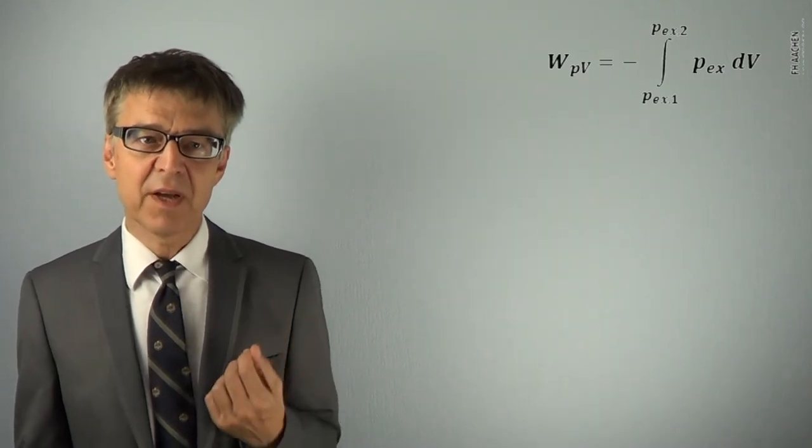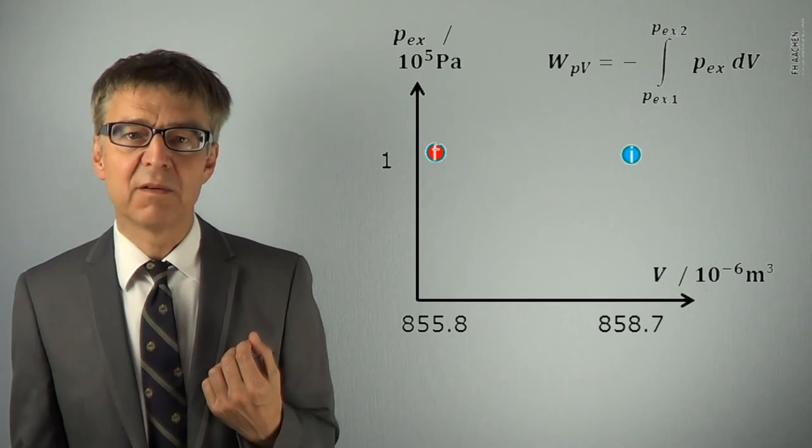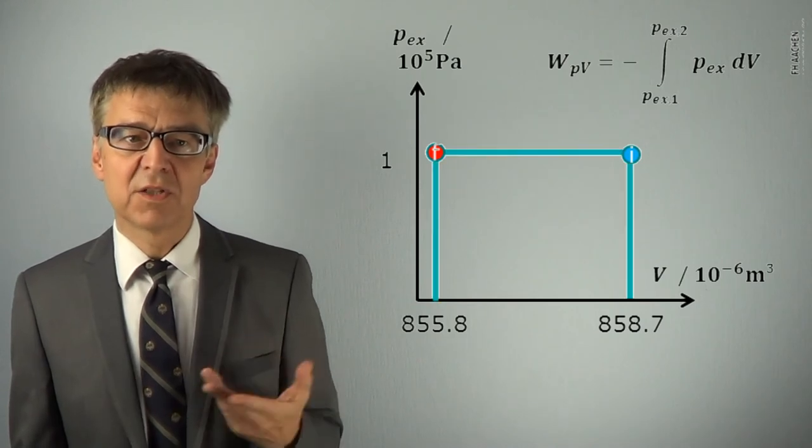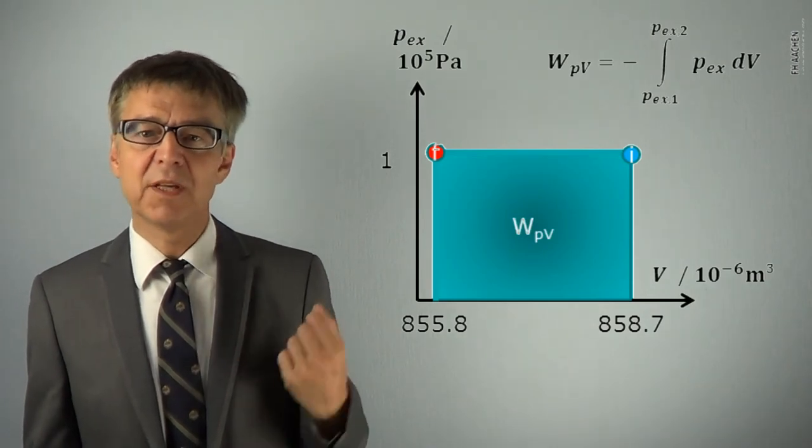The PV work can be represented in the PV diagram as an integral, an area under the corresponding line from initial to final state. So, we end up with 0.29 joules PV work.